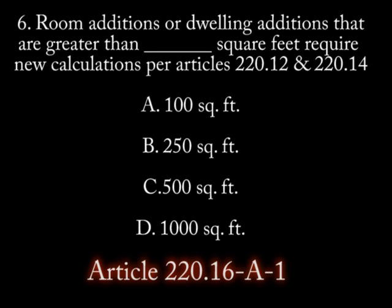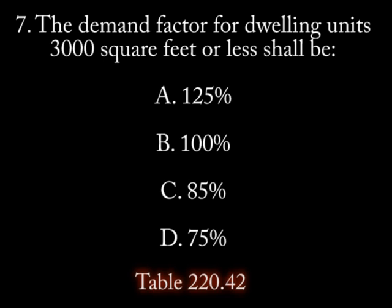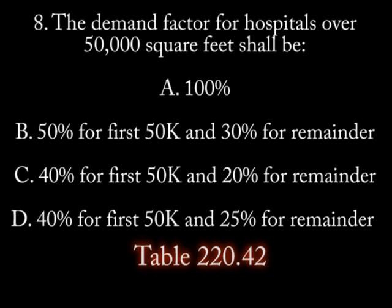Question 7: The demand factor for dwelling units of 3,000 square feet or less shall be: a) 125 percent, b) 100 percent, c) 85 percent, d) 75 percent. Question 8: The demand factor for hospitals over 50,000 square feet shall be: a) 100 percent, b) 50 percent for the first 50,000 and 30 percent for the remainder, c) 40 percent for the first 50,000 and 25 percent for the remainder.